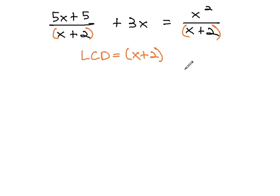So, to clear the fractions so that we don't have to worry about them anymore, we'll multiply x + 2 by each term. Notice, we also multiply the x + 2 by the 3x.